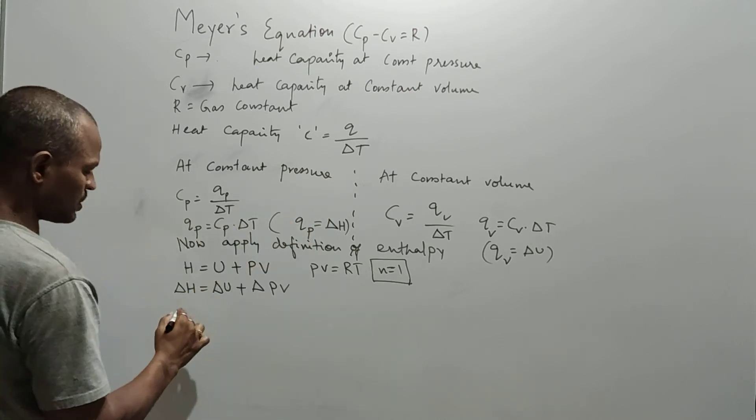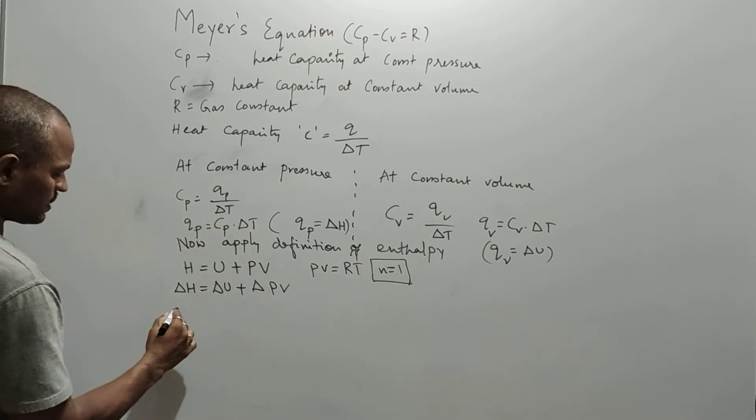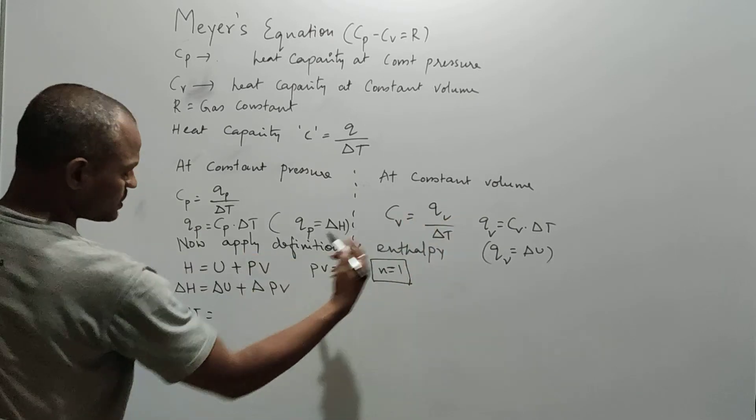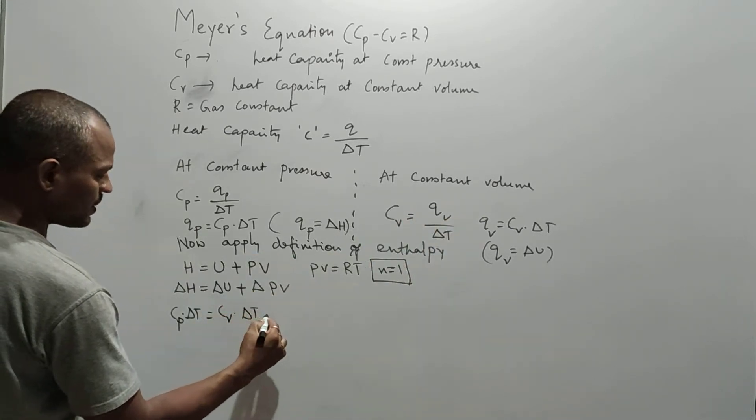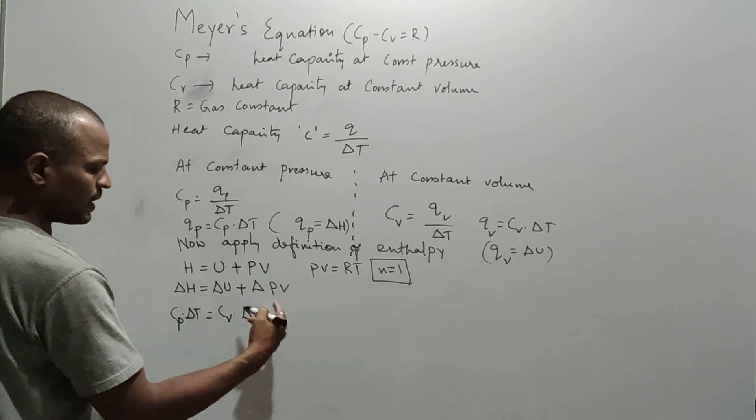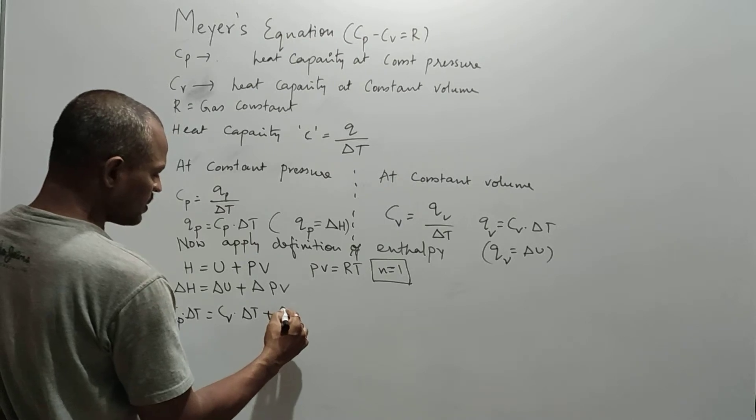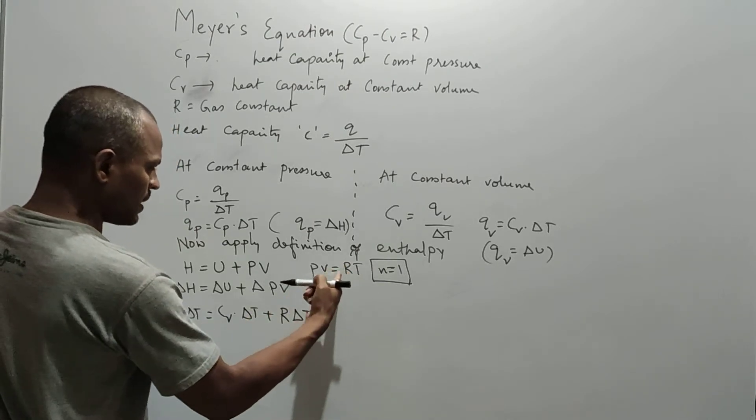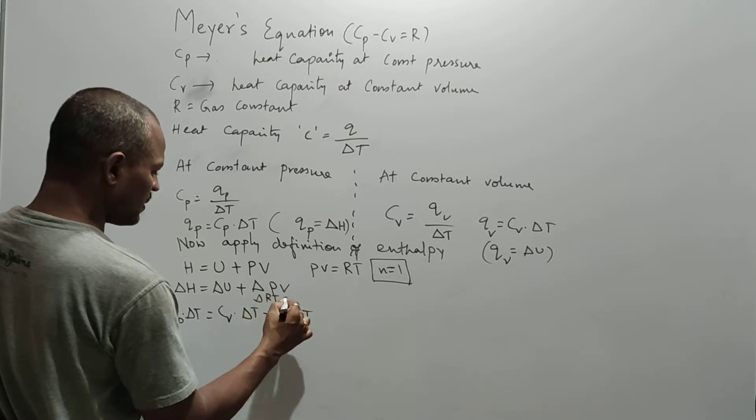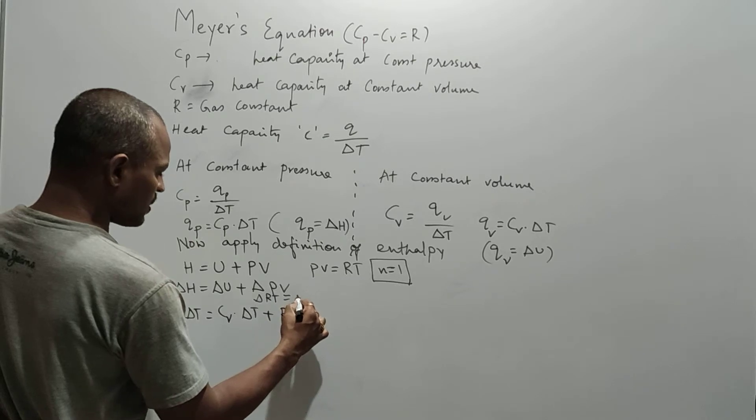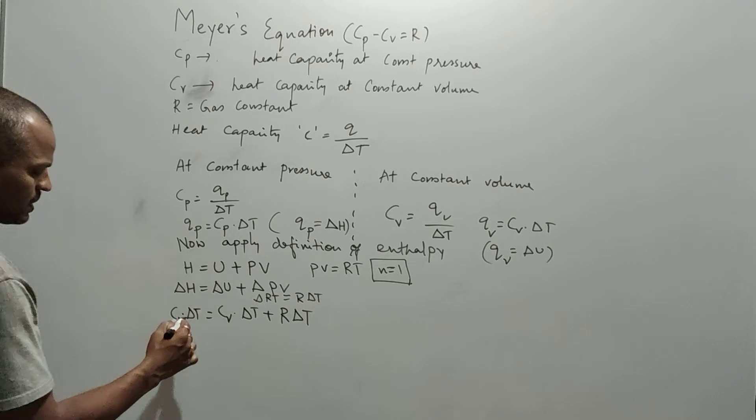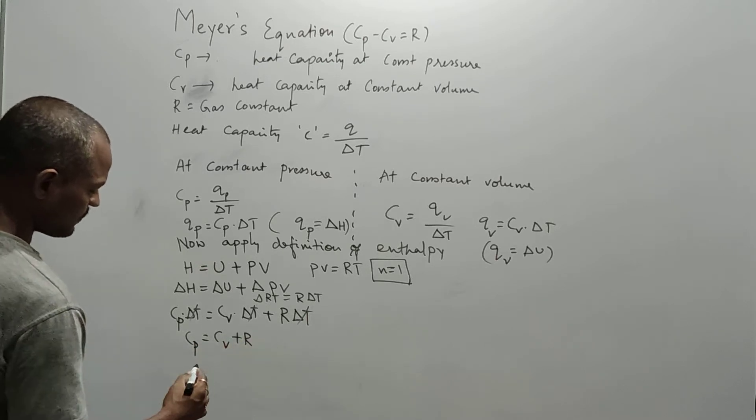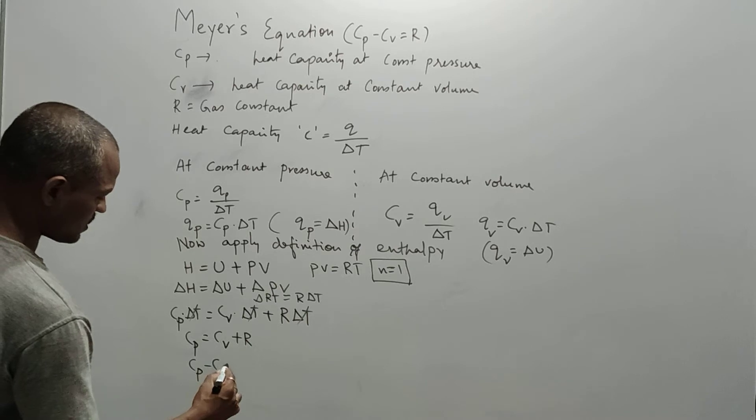Now the del H will become Qp. Qp is nothing but Cp. So that means I'll write the same, Cp into del T equals del U is nothing but Qp, Qp is nothing but Cv del T plus I write the PV as R del T. The reason is because del RT will become R del T. So now the del T is common here, so because of that it will become Cp equals Cv plus R, where Cp minus Cv equals R.